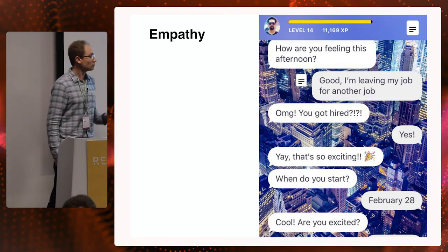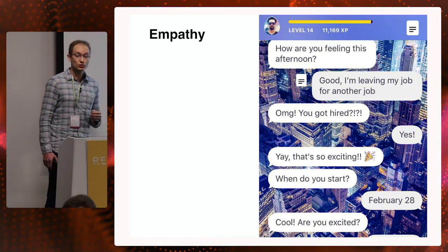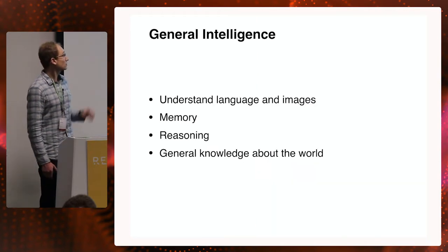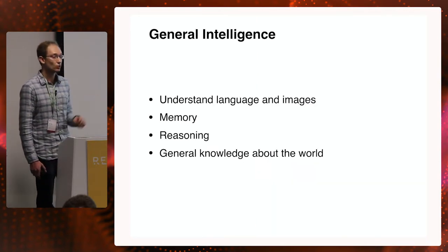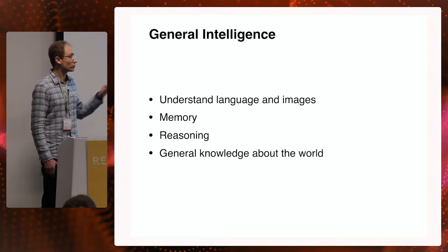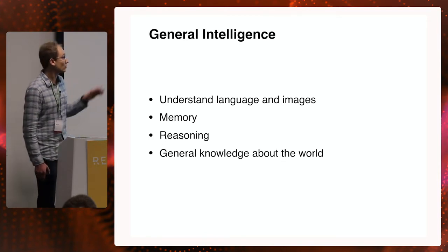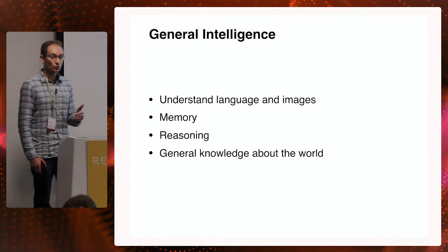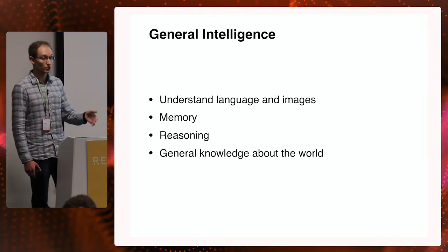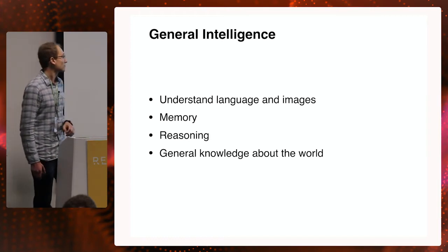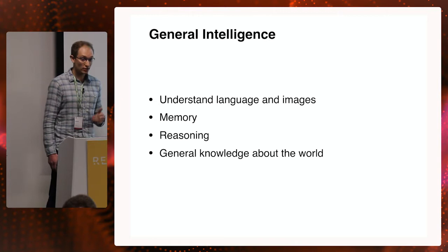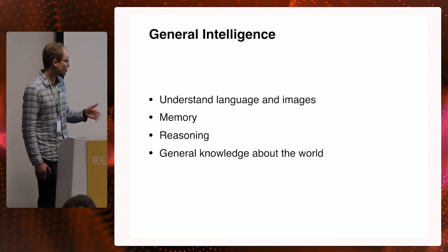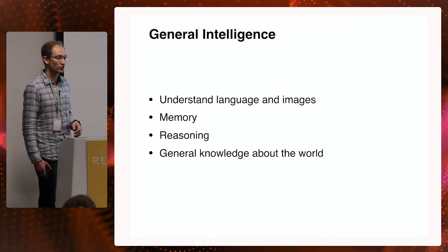In this example, Replica remembered that the user felt bad last time they spoke. It started a dialogue asking how the user is feeling right now and stating that it was worried about her. Through the dialogue, it turns out the user was drunk the previous night and texted her ex. Then Replica asked how many drinks the user had, to which Replica replied, 'You don't want to know, my friend.'